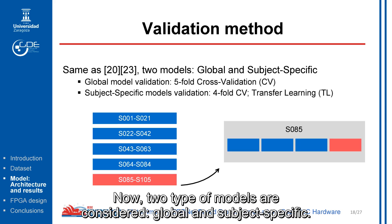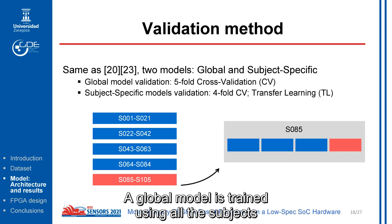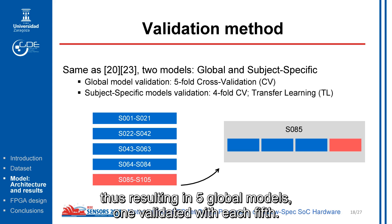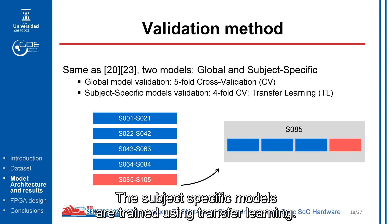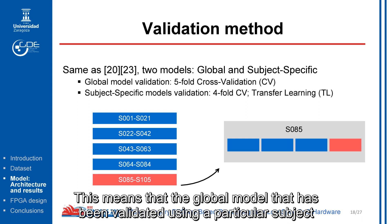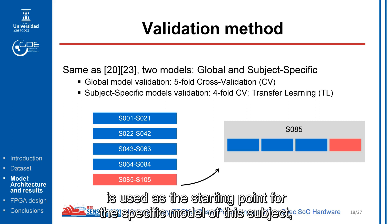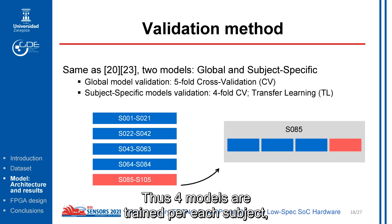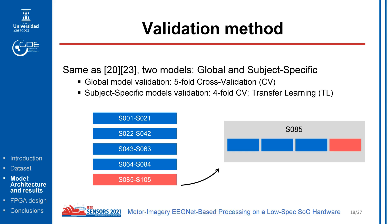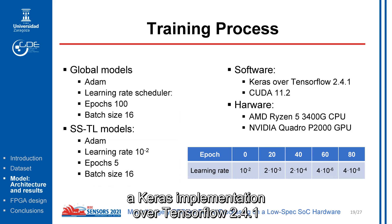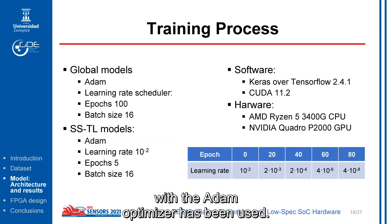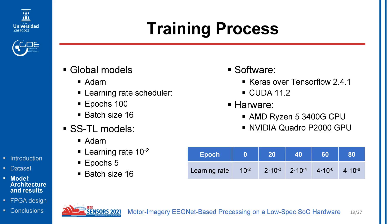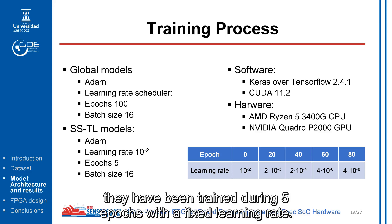Two types of models are considered: global and subject-specific. A global model is trained using all subjects and validated using 5-fold cross-validation, meaning one-fifth of the subjects is used to validate a model trained using the other four folds, resulting in five global models. Subject-specific models are trained using transfer learning — the global model validated using a particular subject is used as a starting point for the specific model of that subject, which is then validated using four-fold cross-validation across trials. Thus, four models are trained per subject, resulting in a total of 420 subject-specific models. For training, Keras over TensorFlow 2.4.1 with the ADAM optimizer was used. Global models were trained for 100 epochs with a learning rate scheduler decreasing every 20 epochs, while subject-specific models were trained for 5 epochs with a fixed learning rate.